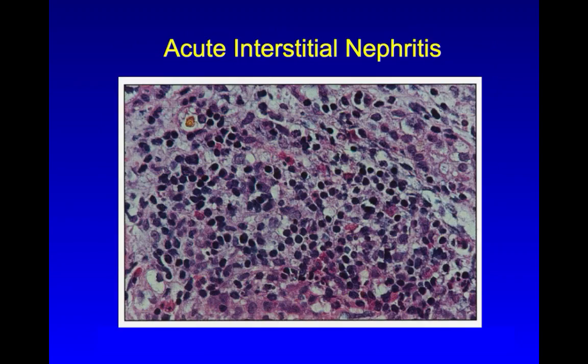By contrast, in acute interstitial nephritis caused, for instance, by drugs or infection, you see an intense inflammatory infiltrate that attacks the interstitium and obscures the renal architecture, and the tubular cells die as a result of inflammatory injury.